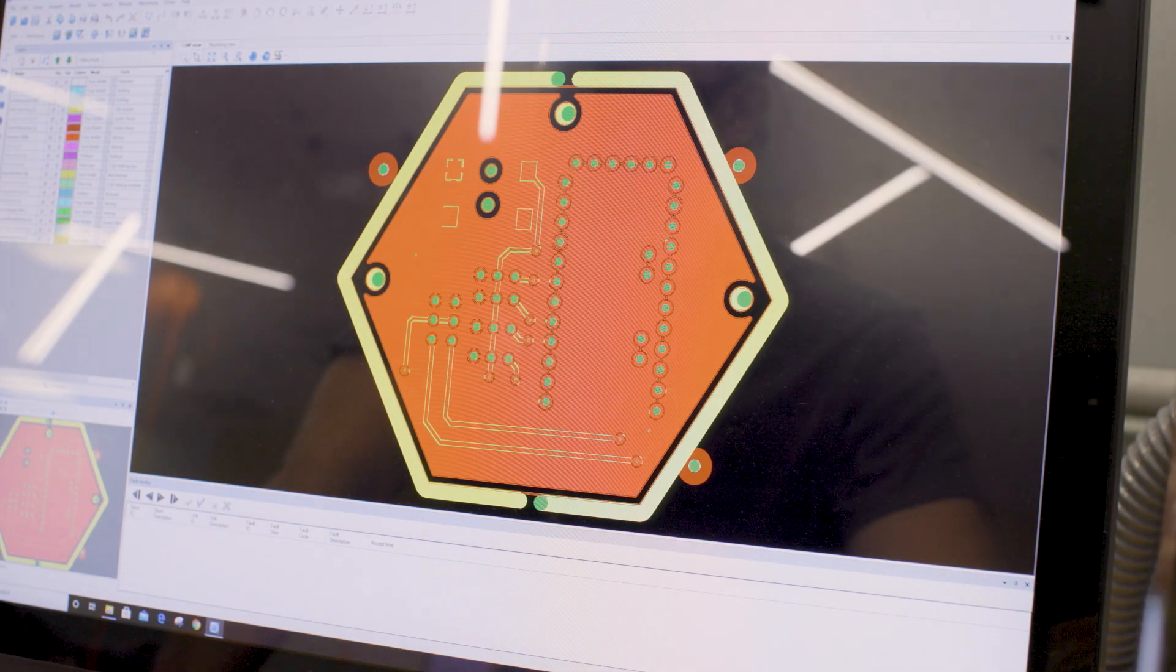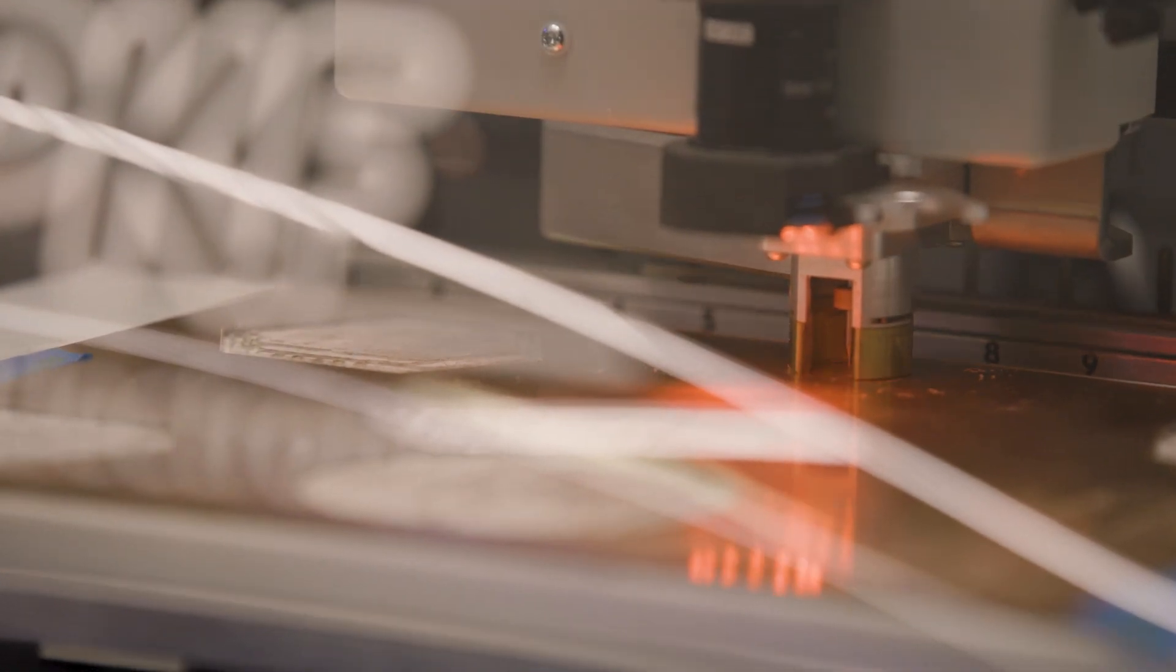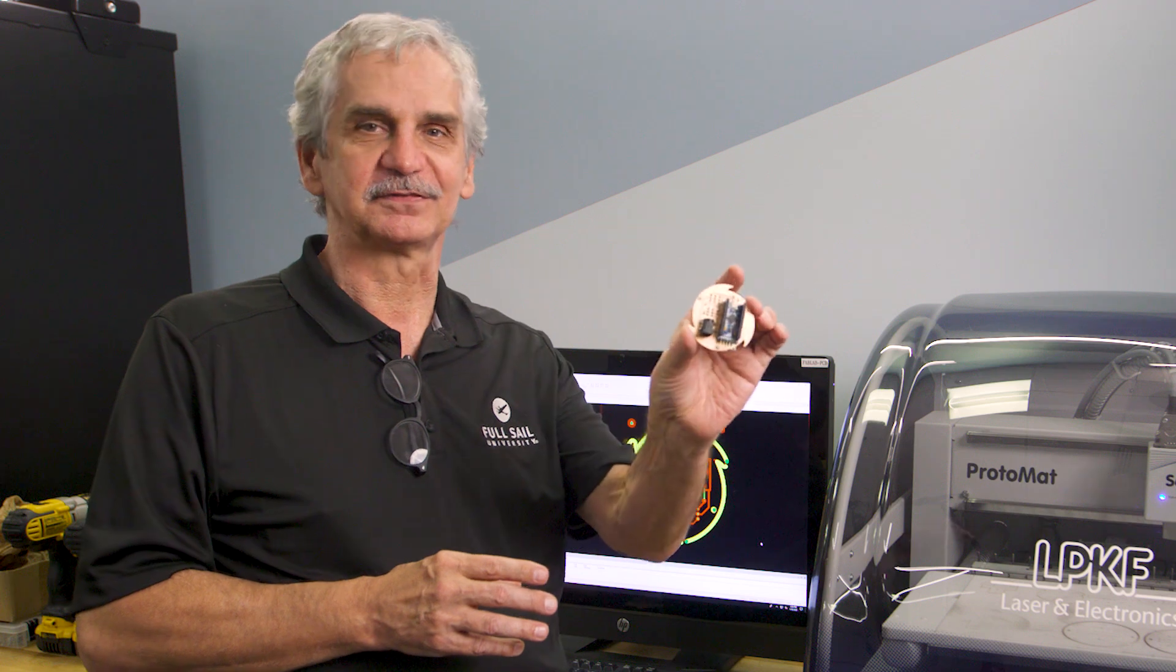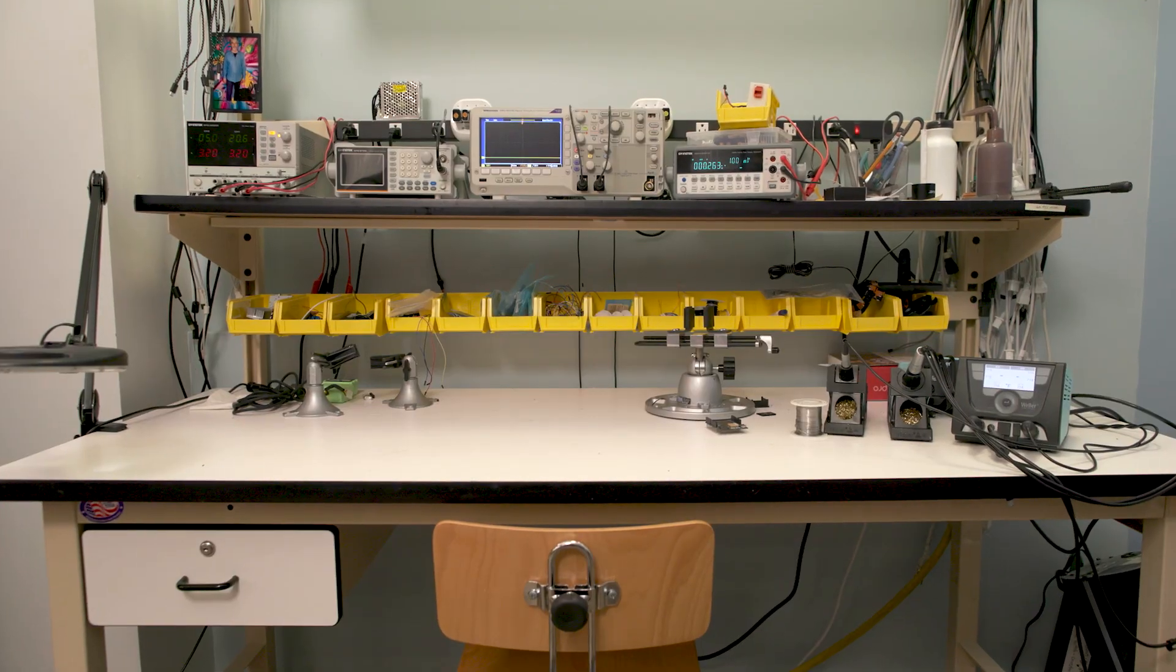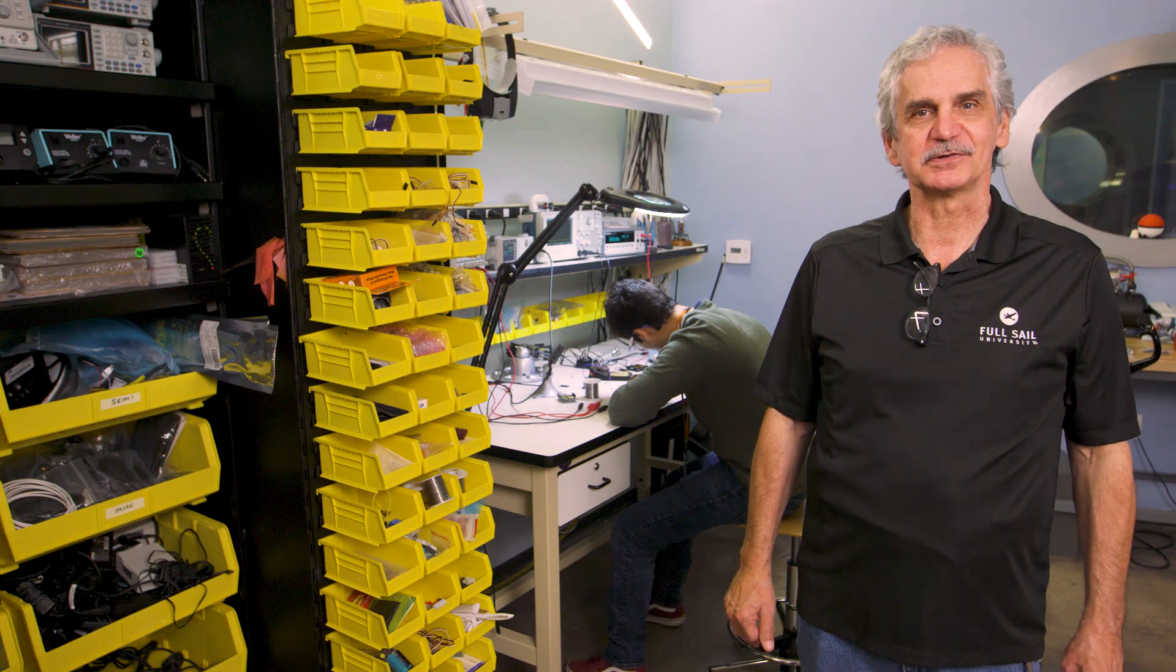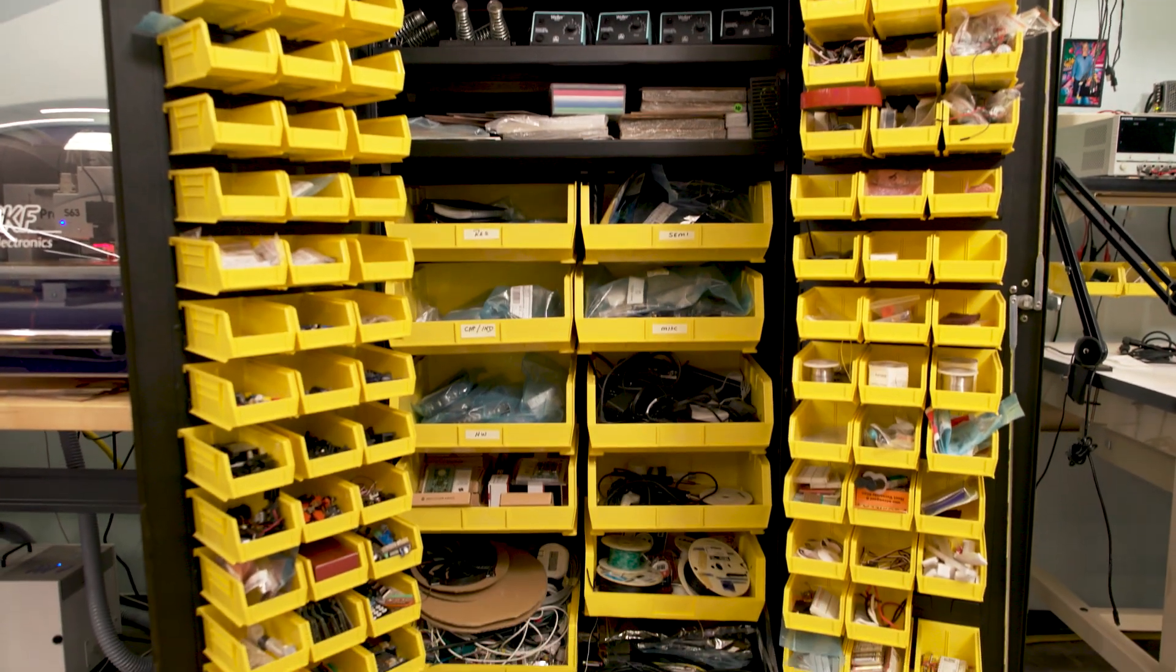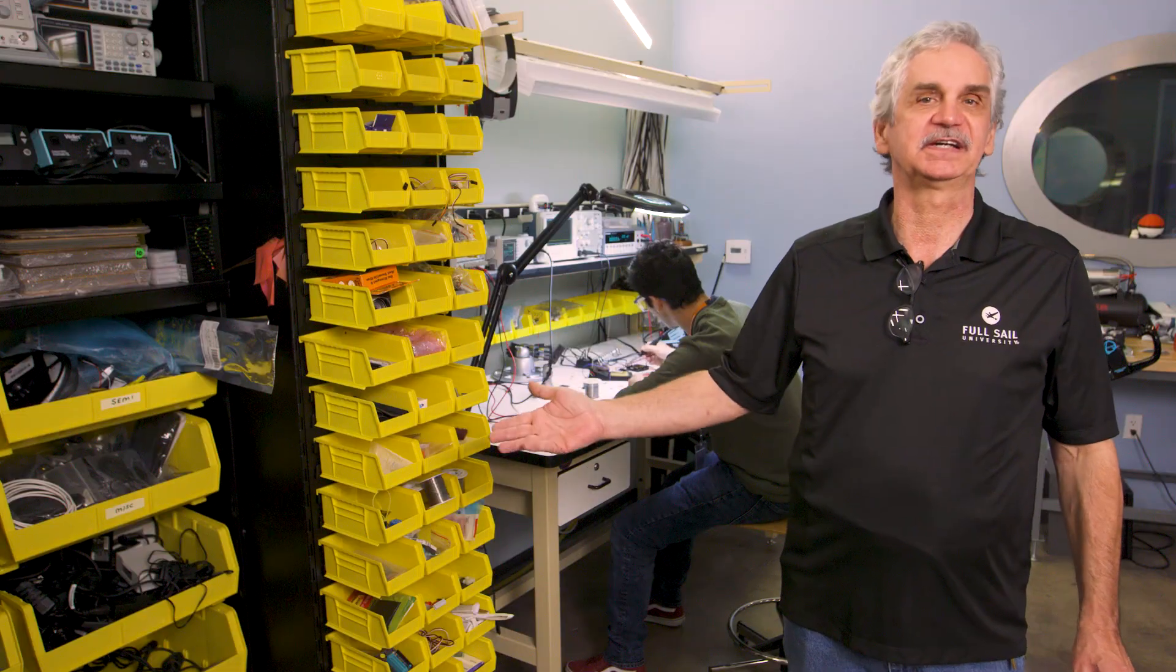This is our LPKF circuit board making machine. This allows students to design and fabricate their own circuit board. Traditional circuit boards are square and at Full Sail University, not square. This is our electronic center. It has tools and instruments that allow students to prototype and test their circuit boards. We also have cabinets filled with electronics gear so students can find whatever they need.